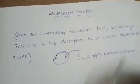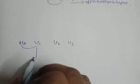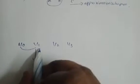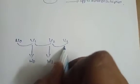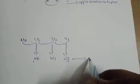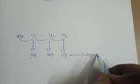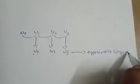As shown in the figure, let us consider V0, V1, V2, V3. V0 and V1 decompose into C and W1; V2 and V3 decompose into C and W2, W3. These are called approximation subspaces. This is wave packet transformation.